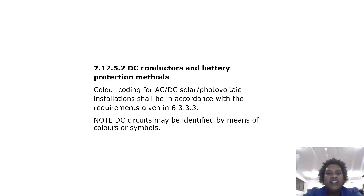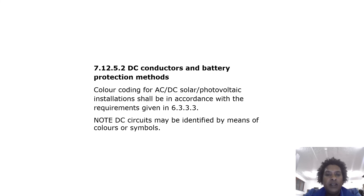DC conductors and battery protection: colour coding for AC/DC solar voltage installations shall be in accordance with the requirements given in 6.3.3. Note: DC circuits may be identified by means of colours or symbols.